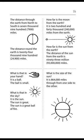Page 75. The distance through the earth from north to south is 7,900 miles. The distance around the earth is 24,900 miles. How far is the moon from the earth? It is 240,000 miles from the earth. How far is the sun from the earth? The distance of the sun from the earth is 93,000,000 miles. What is that in your hand? It is a ball. The ball is small. What is that in the sky? It is the sun. The sun is great. The sun is a great ball of fire. What is the size of the sun? It is 864,000 miles from one side to the other.